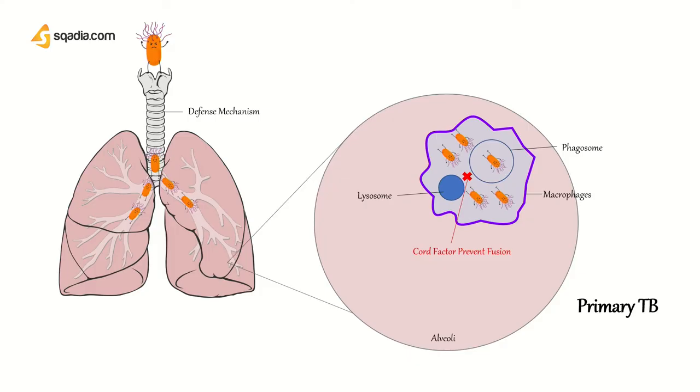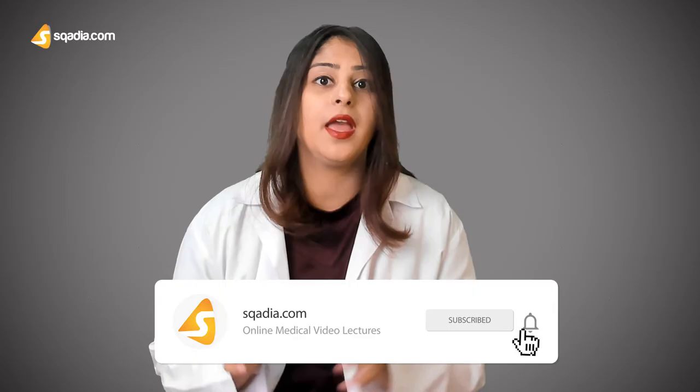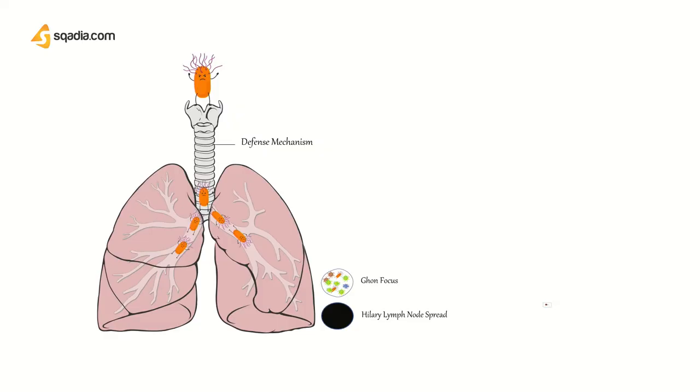The stage of primary TB then develops. Primary TB can be latent for many years or it can be active. According to latest research, around 95% of people have latent TB initially, and only in 5% of people who are immunosuppressed does TB appear actively. In the 95% of individuals, granuloma formation takes place. The granuloma formed in the sub-pleural region is called the Ghon focus. This Ghon focus can travel and engulf the hilar lymph nodes, and it is then called the Ghon complex.